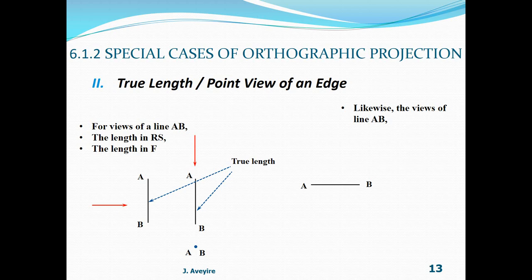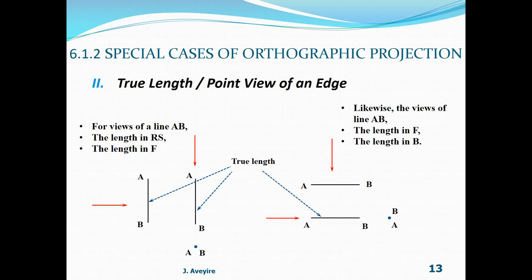Likewise, consider line AB drawn horizontal. A projection from above also gives a horizontal line, and a projection from beneath gives a point AB. Reading these three views — the front view, the bottom view, and the left side view which is a point view — the length in the front view and the length in the bottom view are true lengths.